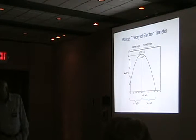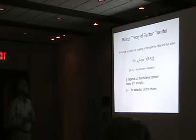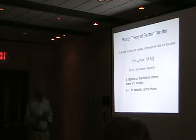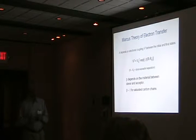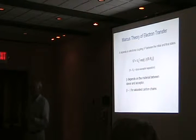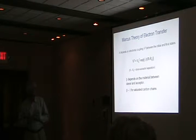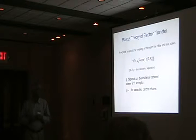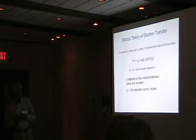The pre-exponential depends on the coupling between the initial and final states, which correlates to the electronic coupling between the donor and the acceptor. The beta in the exponential term depends on what's between the donor and the acceptor. You can have orbitals overlapping through space, but in almost all the systems I'll talk about today, electron transfer occurs through the bonds linking donors and acceptors, and the nature of that bonding network determines beta. For saturated carbon chains it's about 0.9–1.0 Å⁻¹, but for more conjugated systems it can be less — approaching a molecular wire.